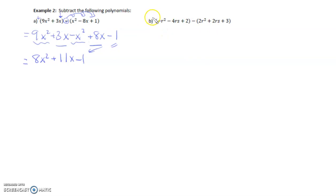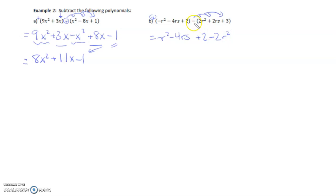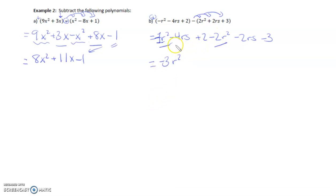Part b: there's technically a positive sign in front of the first bracket, so we bring all those terms down. We apply the negative sign into the second bracket: negative 2r squared, negative 2rs, and negative 3. Now collect like terms. Negative 2r squared minus 2r squared — the numbers we're dealing with are negative 1 and negative 2 — gives negative 3r squared. Negative 4rs minus 2rs gives negative 6rs. And positive 2 minus 3 gives negative 1.